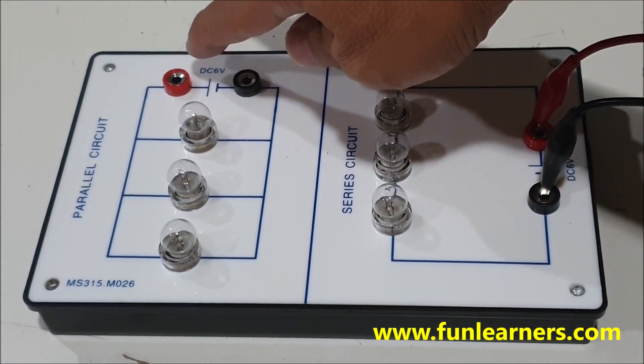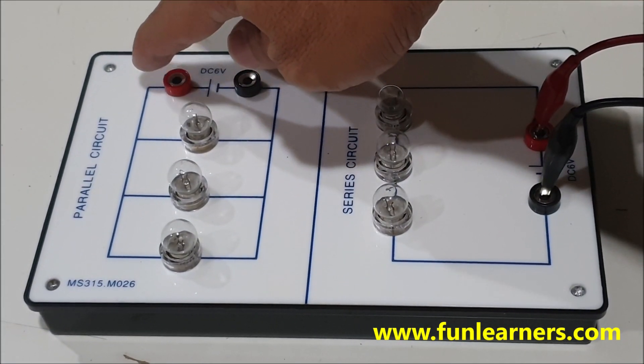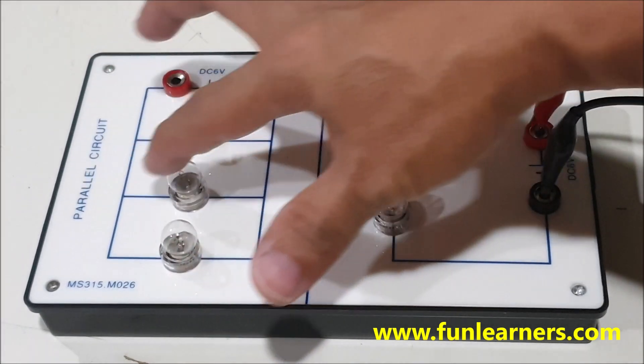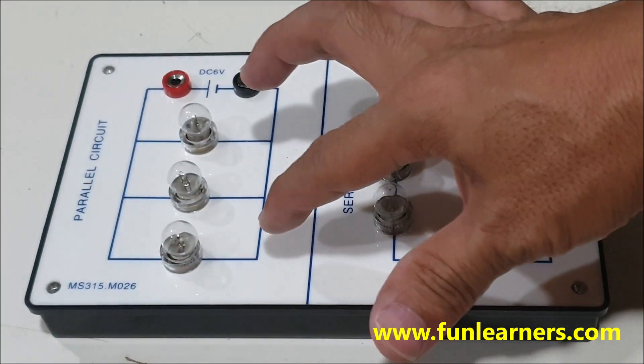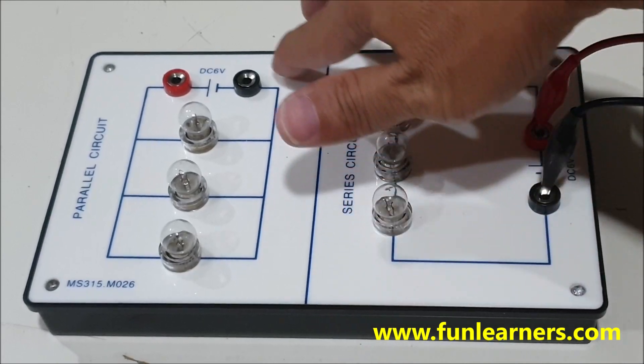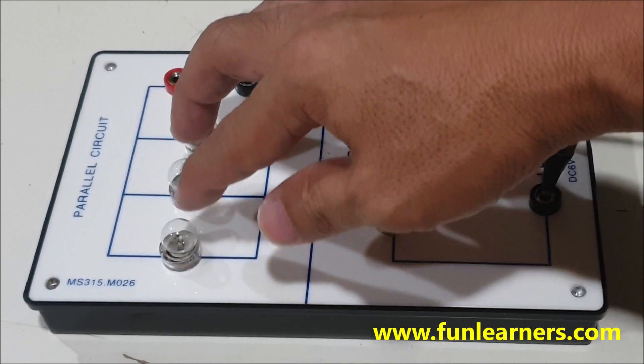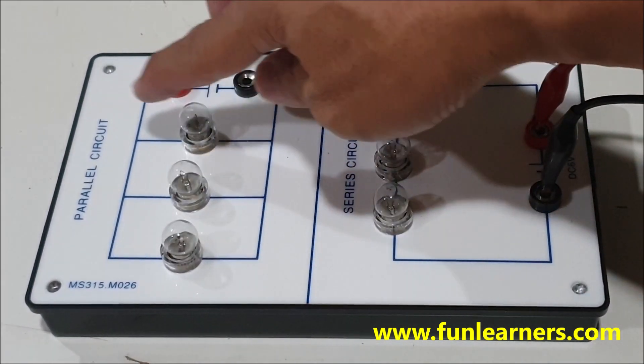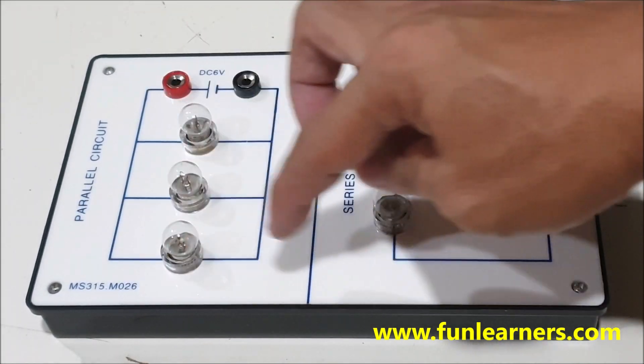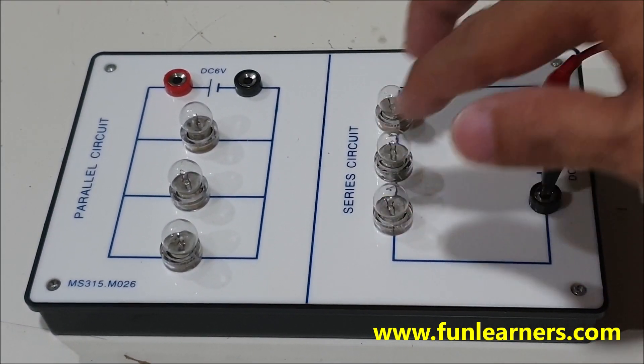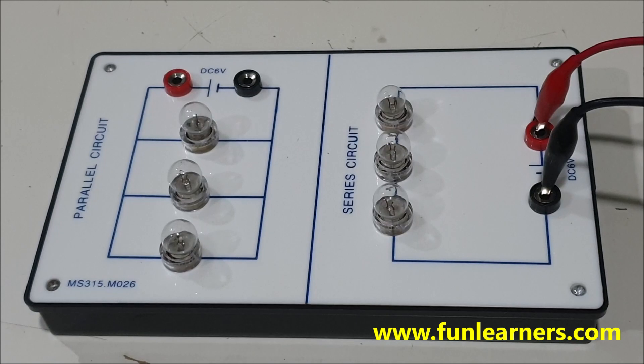on three different branches. The wire when it comes here is split into three branches—one, two, three—then after that they combine together and go back. So a parallel circuit is something like a split. Each light bulb is on one branch, on different wires. In a series circuit, they are on the same wire.